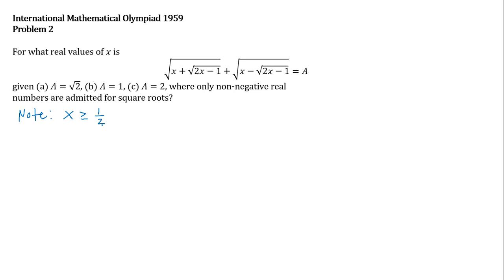We can go ahead and square both sides of the equation. However, I will not go that path. Instead, I will use the substitution method to simplify the given equation, and I also believe that by doing this, we can easily analyze the resulting equation.